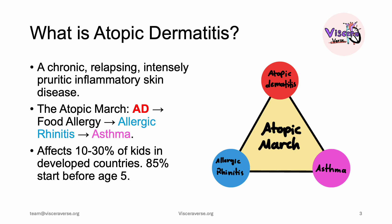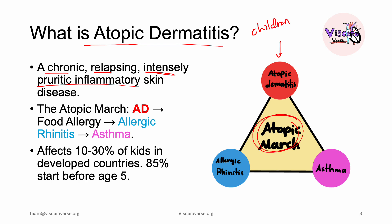Atopic dermatitis is a chronic, relapsing, intensely pruritic inflammatory skin disease. We have something called the atopic march, and atopic dermatitis is the first domino in it. Most patients who develop the atopic march are children — think of a child who develops atopic dermatitis, then food allergy, then allergic rhinitis, and potentially asthma. It affects 10 to 30% of kids in developed countries, and 85% of patients are below the age of 5.